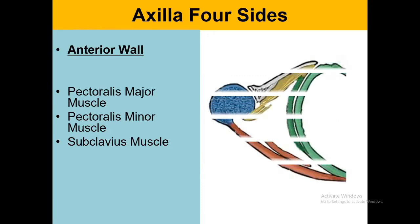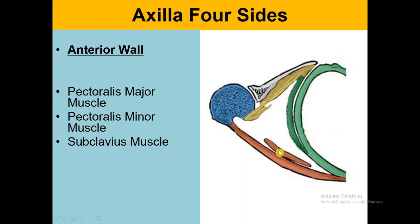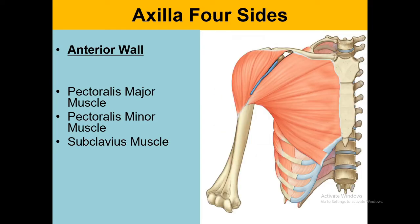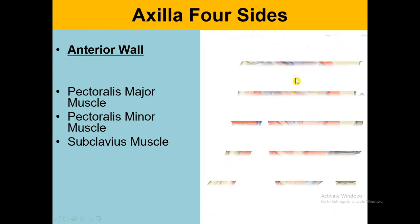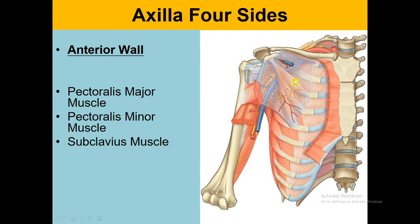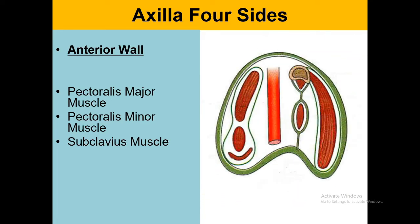Let's talk about the four walls. The first is the anterior wall. The anterior wall of the axilla, shown here in red, contains the pectoralis major muscle, the pectoralis minor muscle, and a very small muscle under the clavicle called the subclavius muscle. The pectoralis major makes the anterior wall, and when we cut the pectoralis major, underneath we find the subclavius and pectoralis minor muscles. These two muscles are embedded in the fascia we call the clavipectoral fascia.